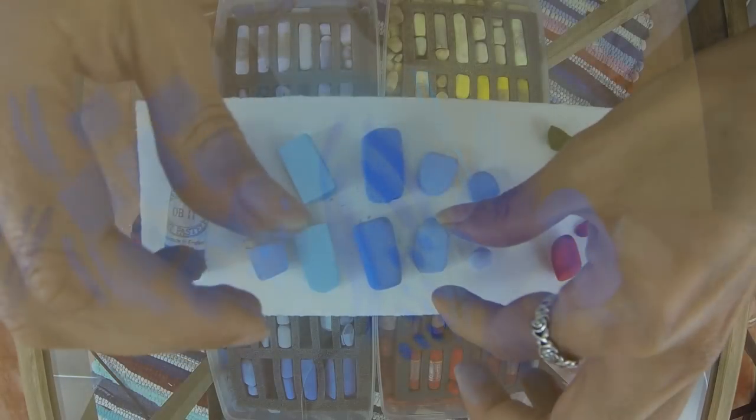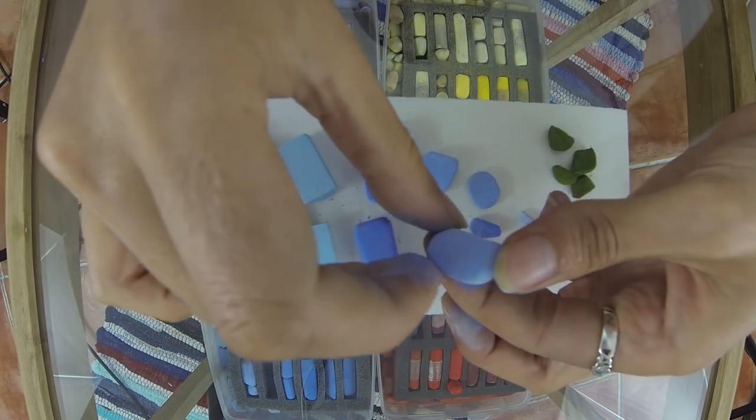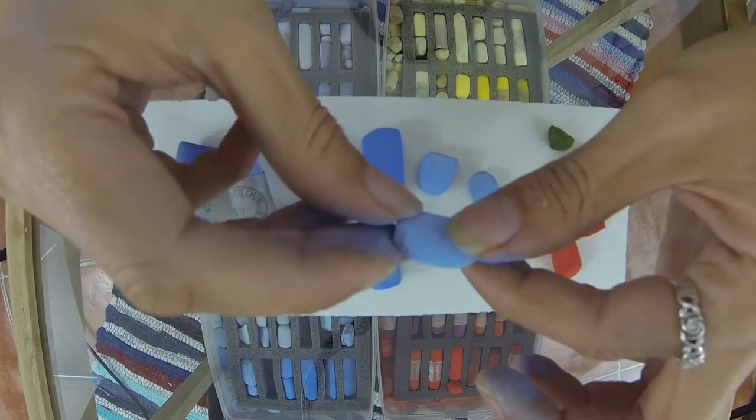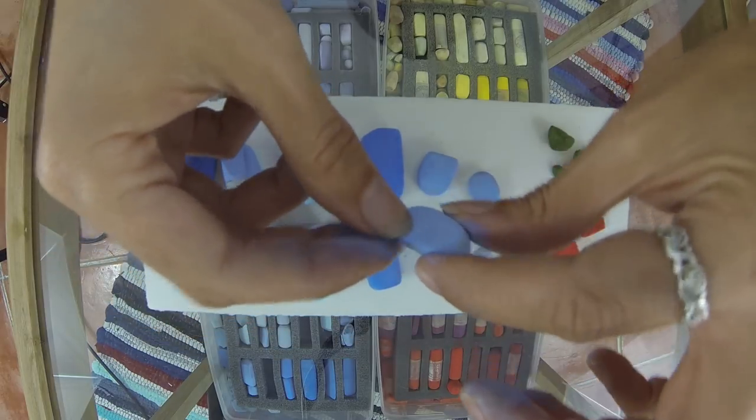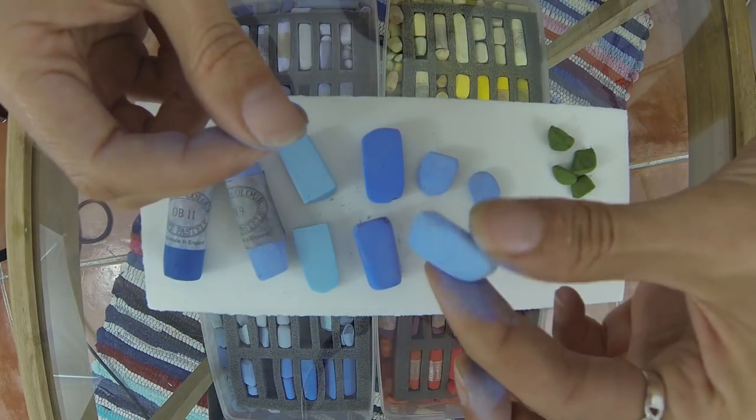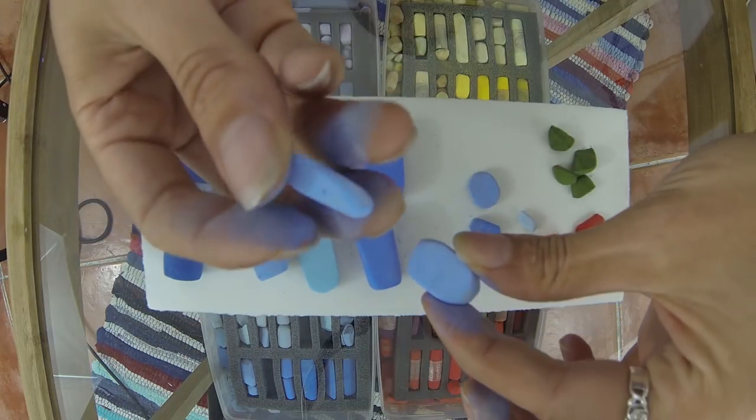But eventually they start to turn into these smaller pebbles. And to be honest, this is really where the pastel starts to get really useful for me. So a lot of my pastels are smaller shapes like this.